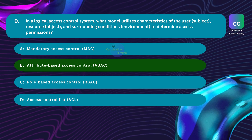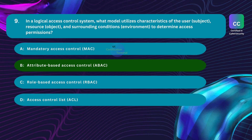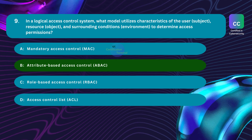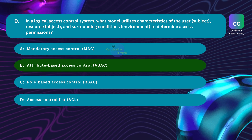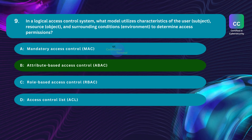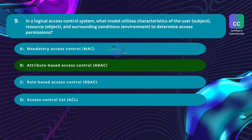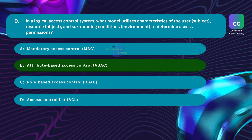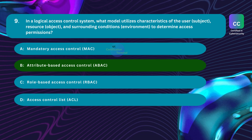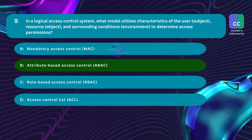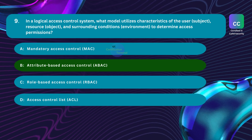ABAC evaluates various attributes associated with the user — such as role, department, clearance level, and location — which define the user's identity and context. It also considers resource attributes such as sensitivity level, classification, type, and owner, providing information about access requirements. Additionally, ABAC accounts for contextual factors like time of access, location, network parameters, and device characteristics. By analyzing all these attributes in real-time, ABAC dynamically evaluates access requests and determines whether to grant or deny access based on configured policies, allowing organizations to define complex, adaptable access control policies.